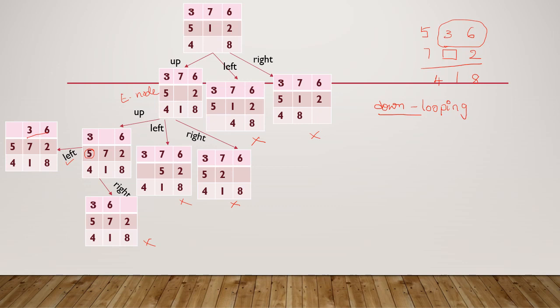Now what are the possible moves from this E node? I can move the down tile or the right tile into the empty slot. Moving the right tile leads back to a looping state, so that is not considered. The only possible operator is moving the down tile into the empty slot, which gives this resulting state.